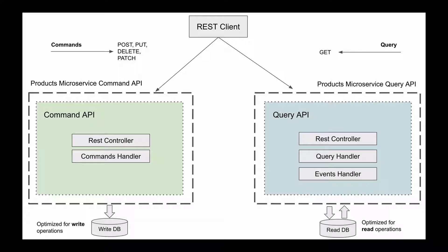If needed, we can start multiple instances of each of these microservices. The left-side microservice, responsible for handling commands, can have a REST controller that will listen for HTTP requests like HTTP POST, PUT, DELETE, or PATCH, and it will have a command handler component that will process the received commands. The responsibility of this microservice will be to accept HTTP requests, validate data, and update the application state. The database of this microservice can be optimized for write operations.